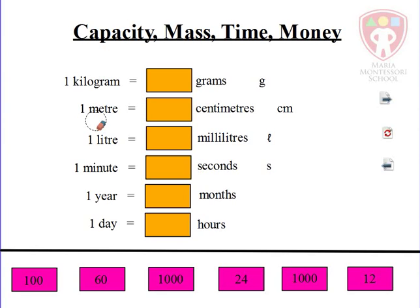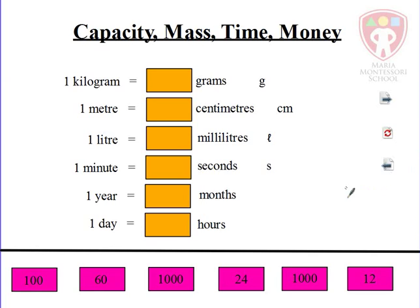Capacity, mass, time, and money. Here we need to know how to convert between various types of measures — various types of capacity, various types of mass, various types of time, and various types of money.